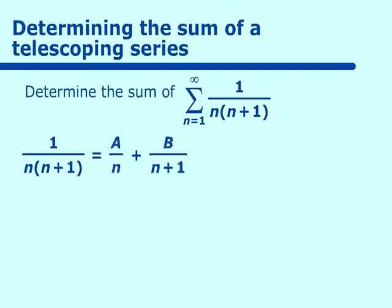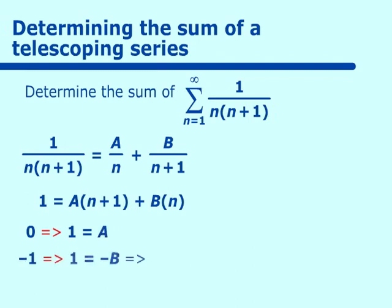Multiplying out, we get 1 equals A(n+1) plus Bn. Putting in 0 for n, we get 1 equals A. Putting in negative 1 for n, we get 1 equals negative B, or B equals negative 1.